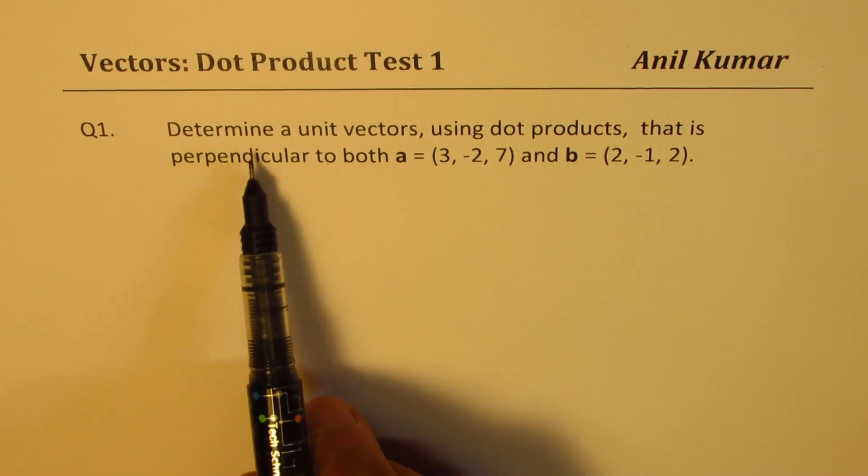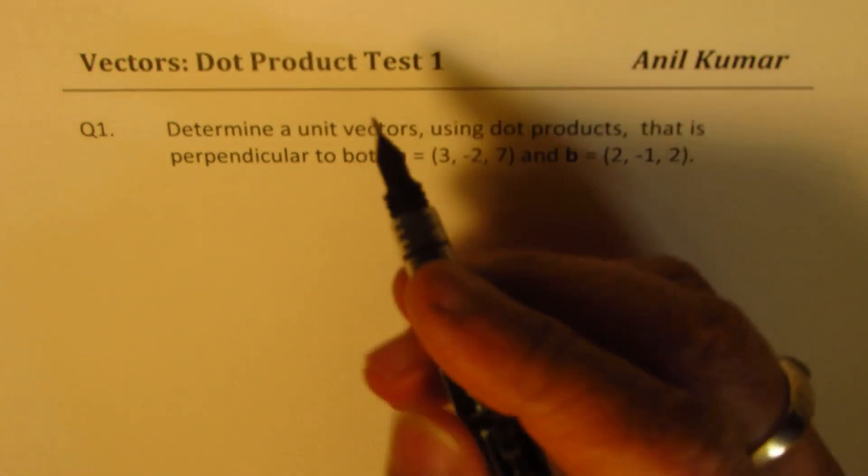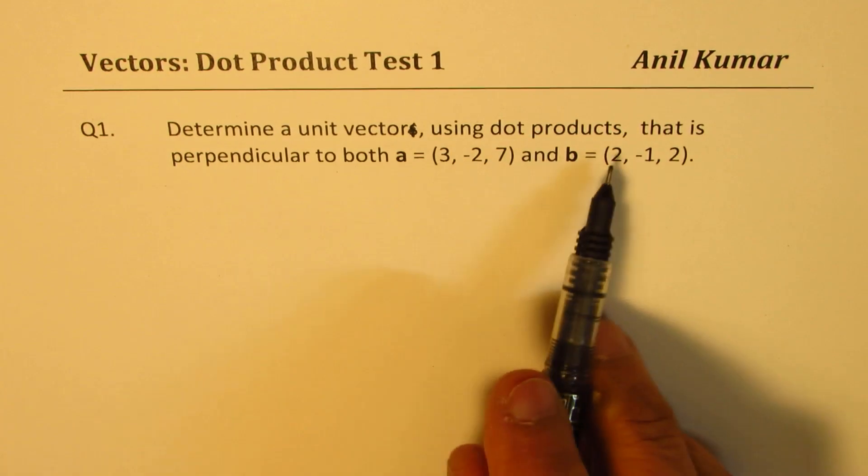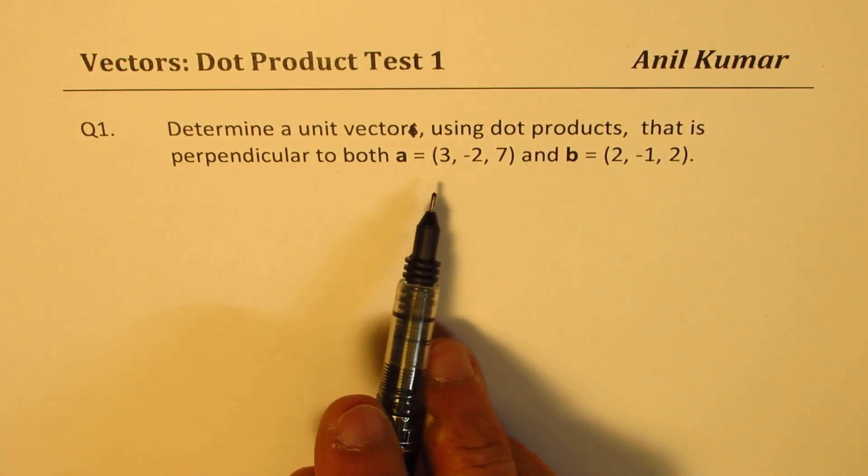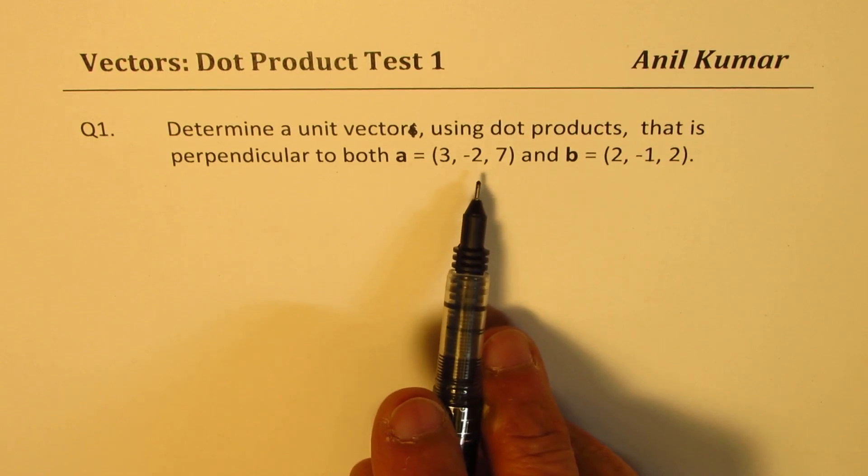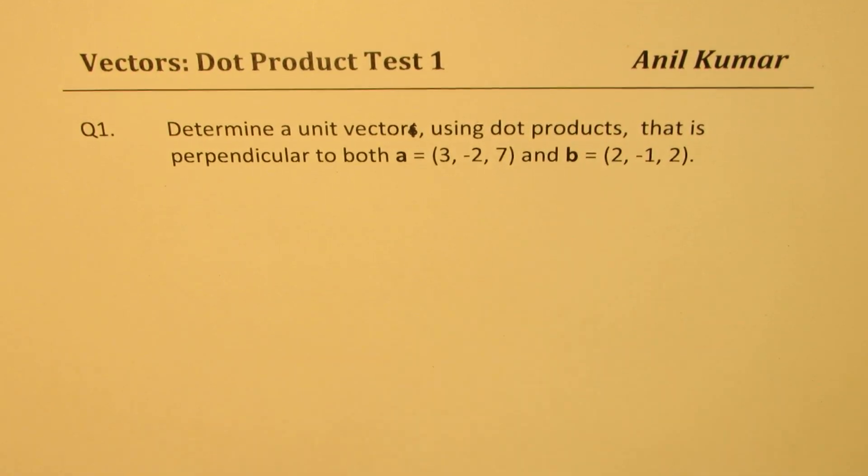Here is a challenge question or difficult question based on dot products. The question here is, determine a unit vector using dot products that is perpendicular to both A, which is vector A, which is 3, -2, 7, and vector B, which is 2, -1, 2. You can always pause the video, answer this question, and then look into my suggestions.